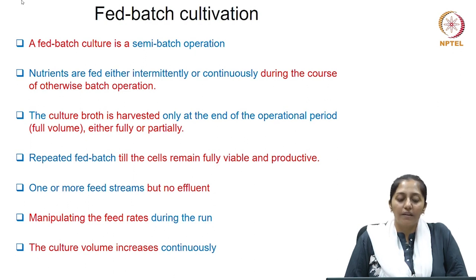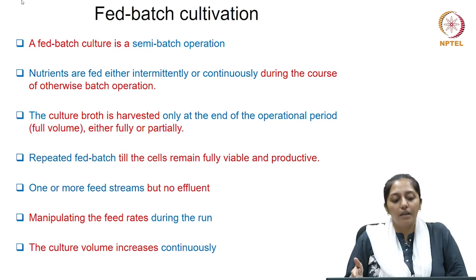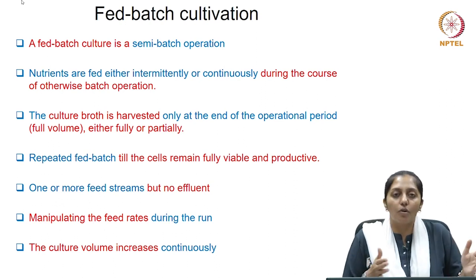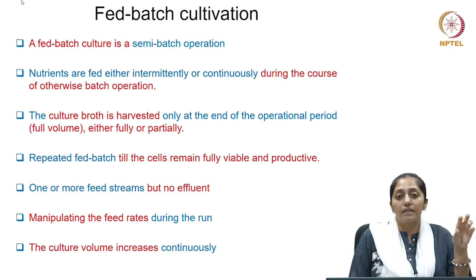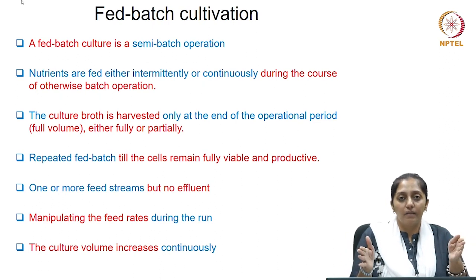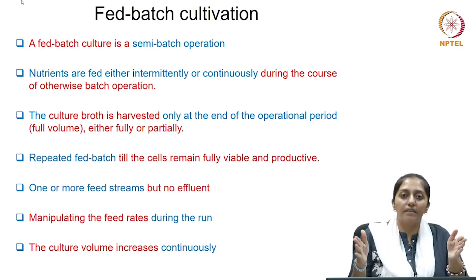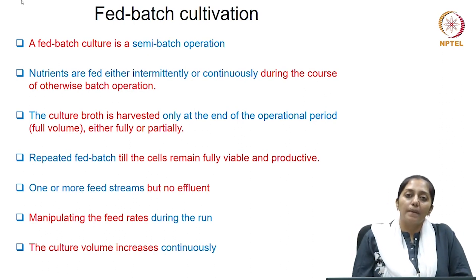Just to reiterate, a fed batch culture is also called a semi-batch operation. Nutrients are fed either intermittently or continuously during the course of an otherwise batch operation. This means that nutrients can be fed after an interval of time inside a reactor once it starts, or it can be fed continuously as the reactor is running till its harvest. This kind of feeding is called fed batch feeding.